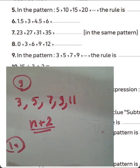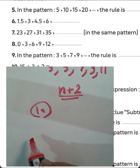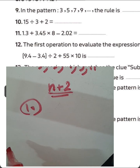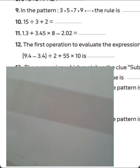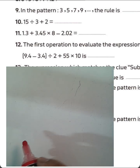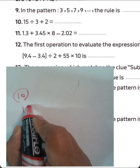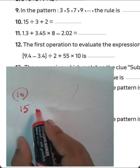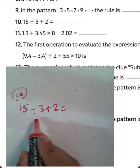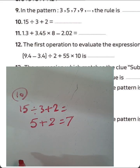Question number 10. Look at question number 10 with me. We have 15 divided by 3 plus 2. 15 divided by 3 equals 5, and 5 plus 2 equals 7.